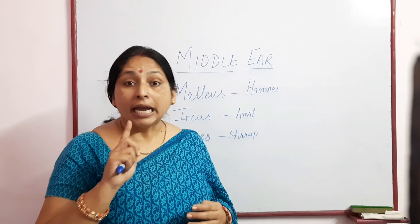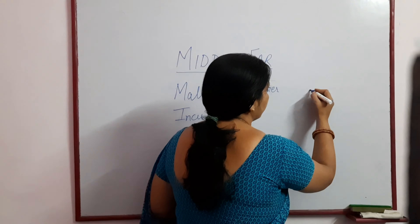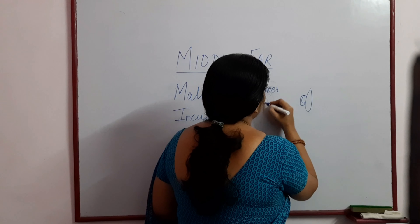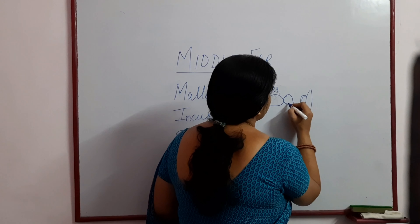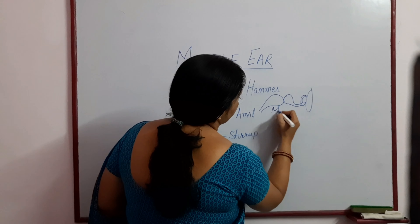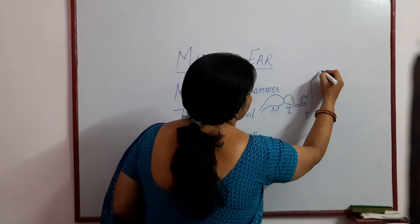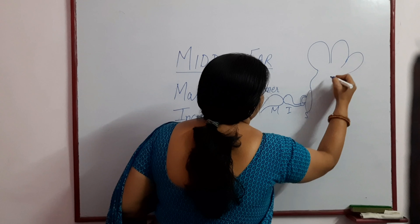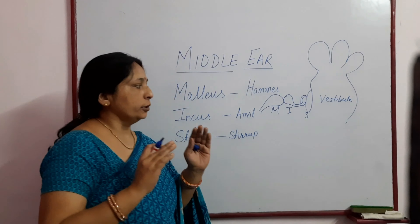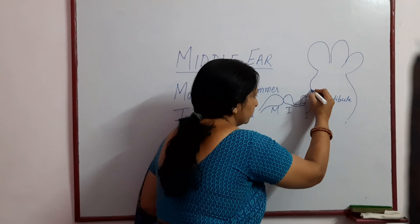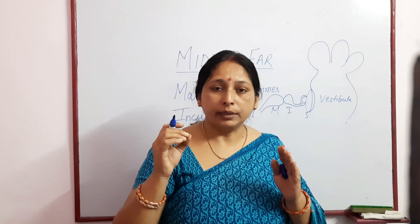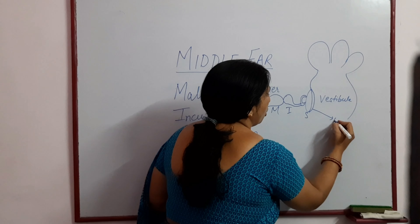The transmission sequence is: malleus transmits waves by hammering to the incus, then it is transmitted to the stapes. The stapes transmits vibration onward - hammer to anvil to stirrup. These three bones are connected to the vestibule, which has an opening where the stirrup gets fitted. This opening is covered with a thin membrane and is termed the oval window.